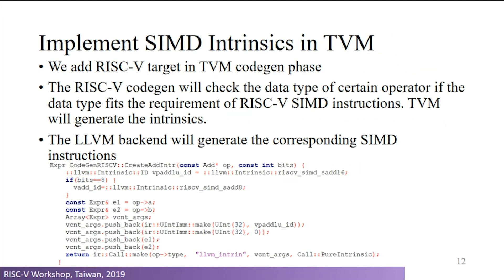For the code generation part, we create SIMD intrinsics so that the LLVM backend can easily map them to SIMD instructions. We add a RISC-V target in TVM's code generation phase. The RISC-V code generator checks the data type for a given operator — if it fits the requirements for a SIMD instruction, it changes it to a SIMD intrinsic, and the LLVM backend generates the corresponding SIMD instruction.